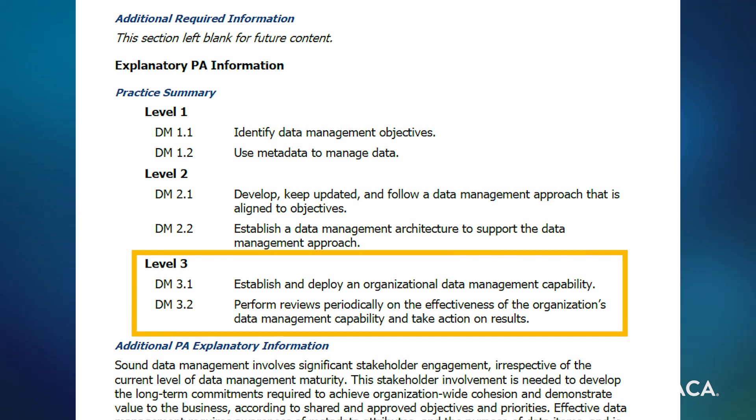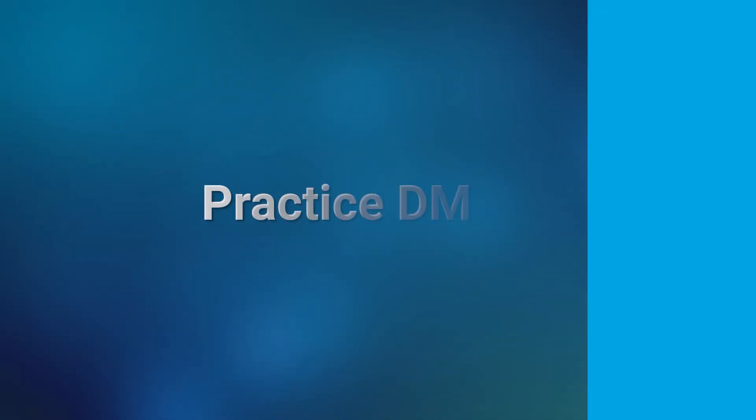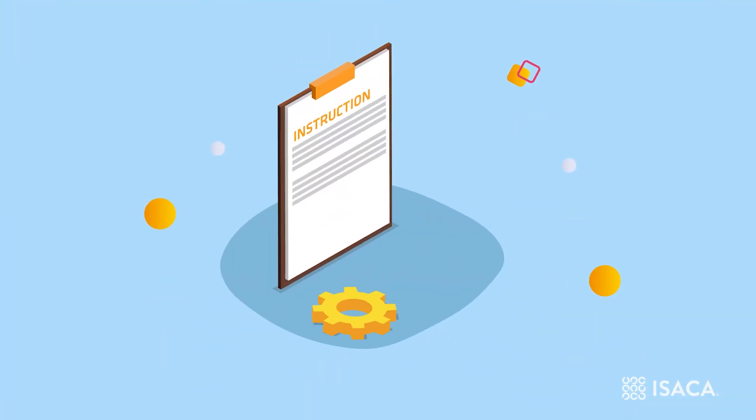The Level 3 practices are instrumental in helping this evolution. To this point, we may have effective but isolated data management approaches. Practice DM 3.1 advocates the establishment of an organizational function that oversees the achievement of organization-wide data management objectives. The additional explanatory information for this practice provides an informative list of things that may be included in the remit of this function. Do not see this list as an exhaustive checklist, but rather as a guide. The specific nature of the organizational function depends heavily on the organization's data management objectives and priorities. It is a reasonable assumption that multiple data management plans may exist in the organization — there may be an organizational level plan addressing the activities of the organizational function, as well as project or service group data management plans that take their lead from the organizational level plans while articulating the specific data management approach for a relevant group.